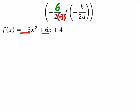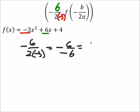So looking at that thing, that gave us a negative 6 over 2 times a negative 3, which would be a negative 6 over negative 6, which would just make that a positive 1.